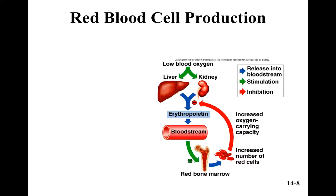When we get low blood oxygen, it causes the kidneys and the liver to release a hormone called erythropoietin. That hormone goes into the bloodstream, travels to the bone marrow, and stimulates red blood cell production there. So those hematopoietic stem cells are stimulated to become red blood cells.